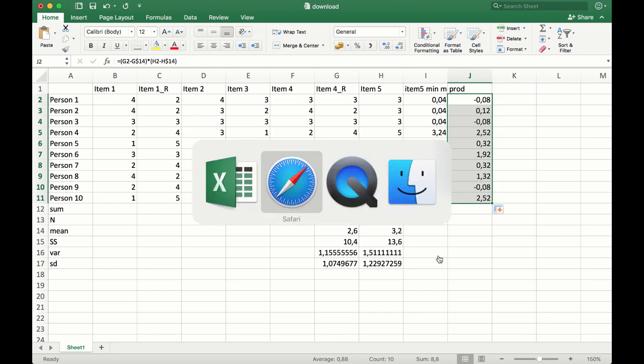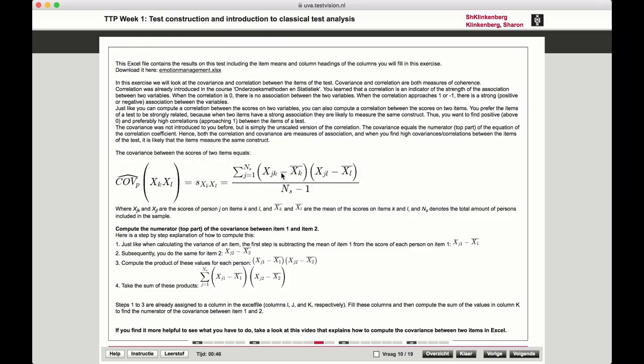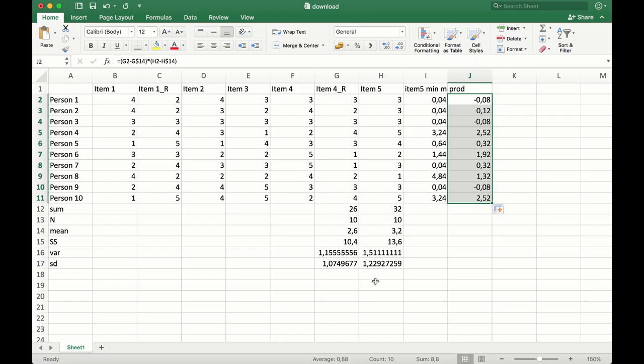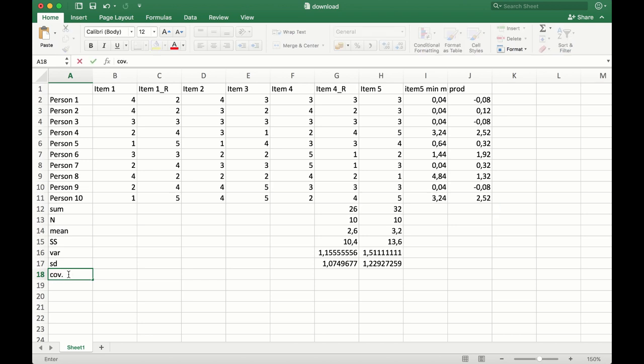The only thing left to do now is calculate the sum for this one. So we're going to use our trusty sum function again for the covariance. Let's do this.